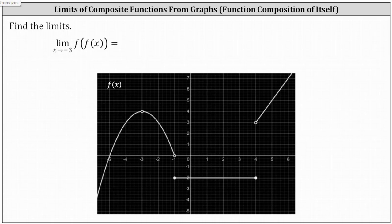So we're approaching x equals negative three, which would be this vertical line here, and we're approaching from the left as well as from the right. Notice we're approaching the y value or function value of positive four. And since the y values of the inner function become the inputs for the outer function, and f of x is discontinuous at x equals four, it's important to recognize we're approaching the y value of four from below, or from values less than four.